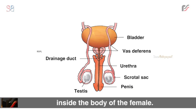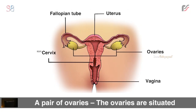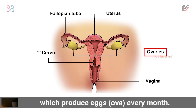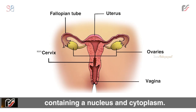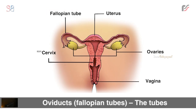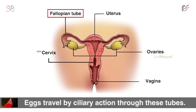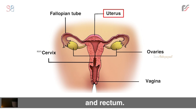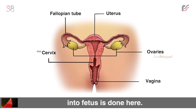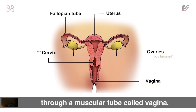Organs of the female reproductive system: a pair of ovaries. The ovaries are situated in the abdominal cavity and produce eggs (ova) every month. An egg or ovum is a single cell containing a nucleus and cytoplasm. Oviducts, also called fallopian tubes, are the tubes that join the uterus and ovary. Eggs travel by ciliary action through these tubes. The uterus (womb) is a muscular organ located in the pelvis between the bladder and rectum; the development of fertilized eggs into a fetus is done here. The uterus is connected to the outside of the body through a muscular tube called the vagina.